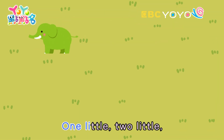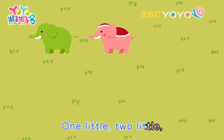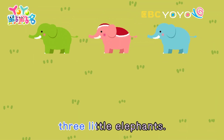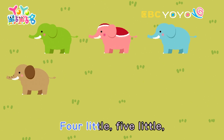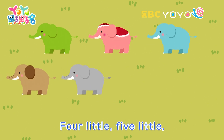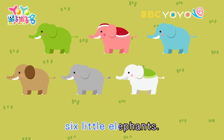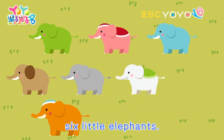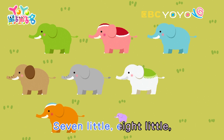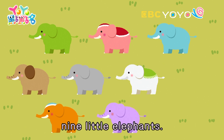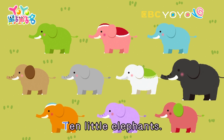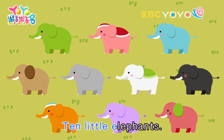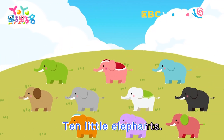One little, two little, three little elephants. Four little, five little, six little elephants. Seven little, eight little, nine little elephants. Ten little elephants.